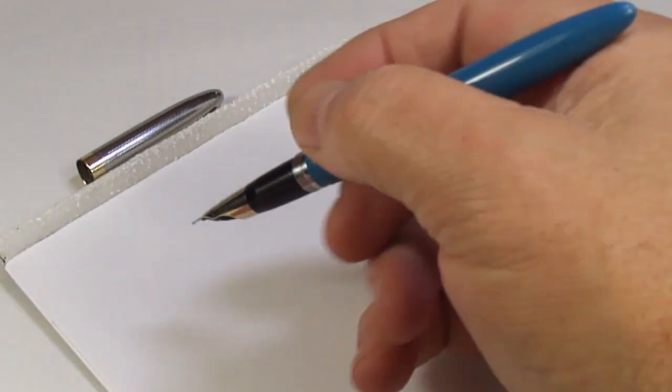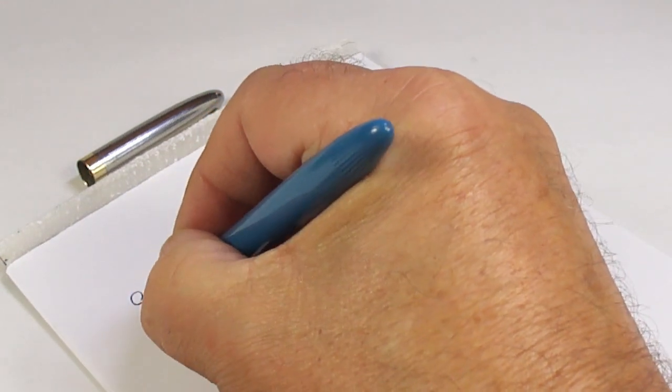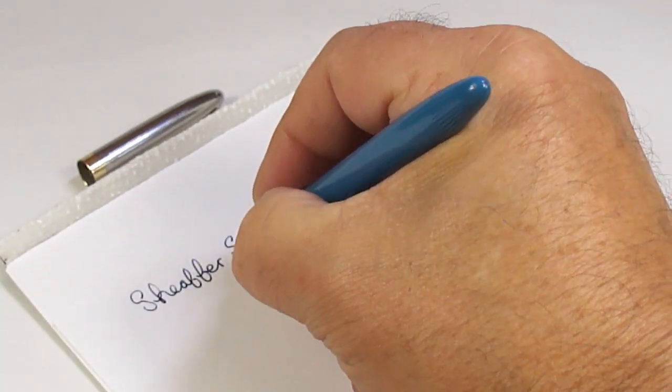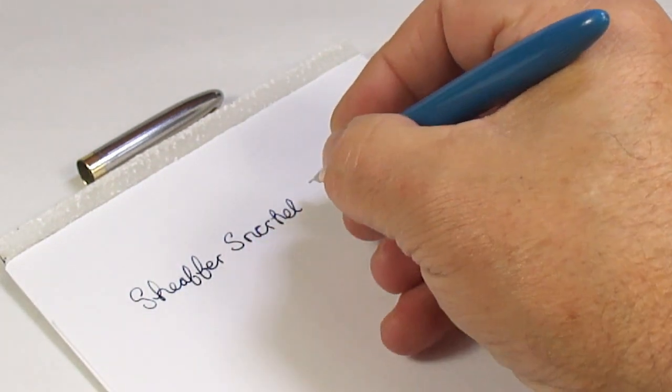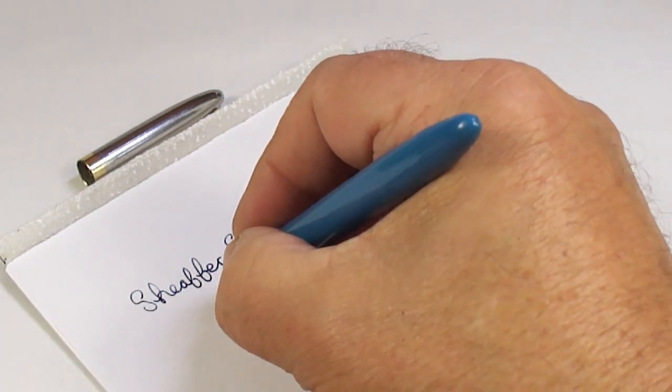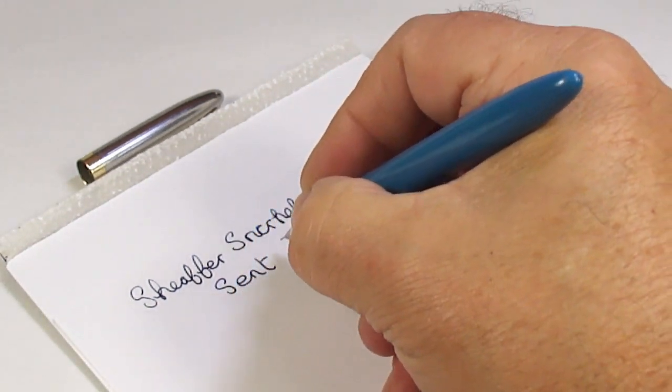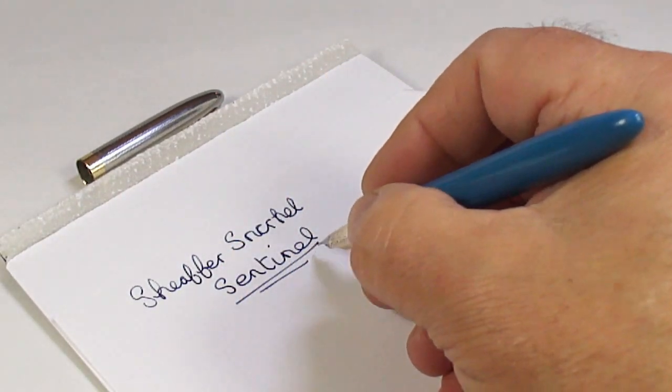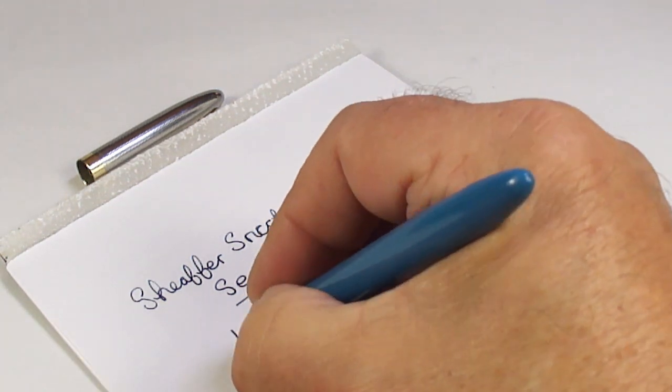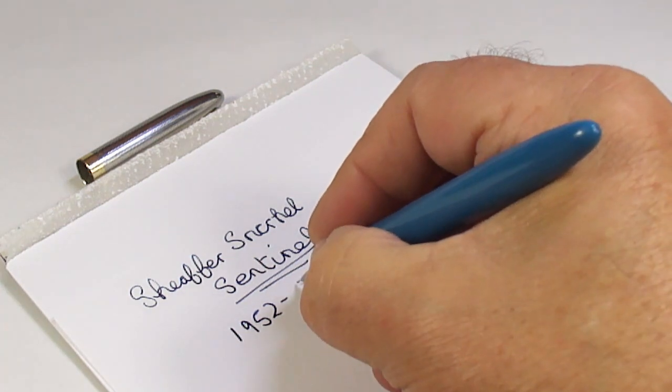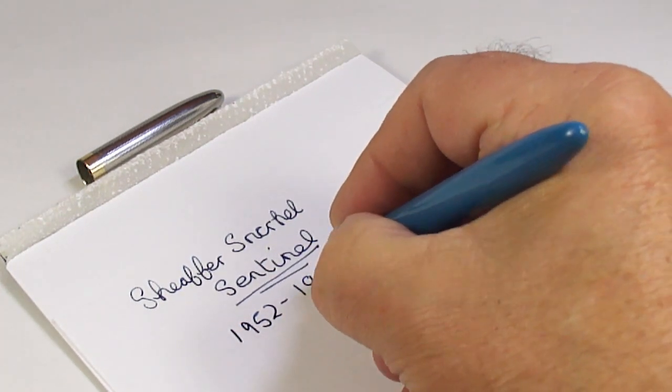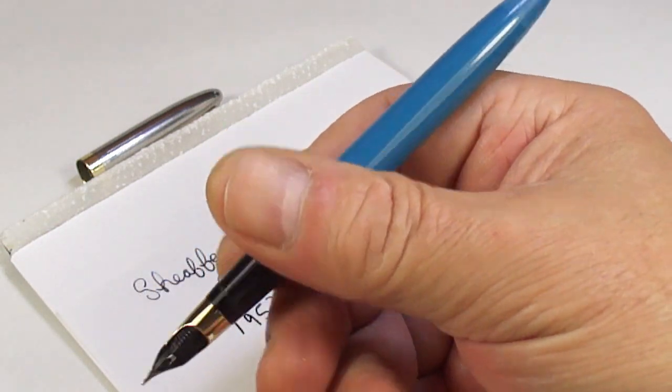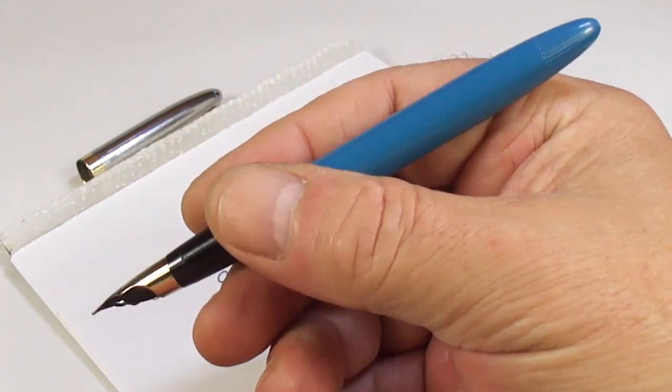And let's see how the pen writes. So, what we have is, a Schaefer snorkel. And as we said earlier, it's a Schaefer snorkel sentinel. Dating the pen, 1952 through to around about 1959. These pens were actually a competitor to the Parker 51s.